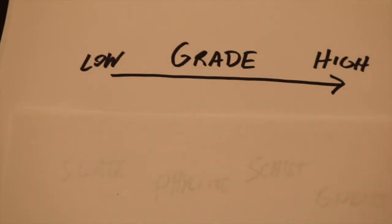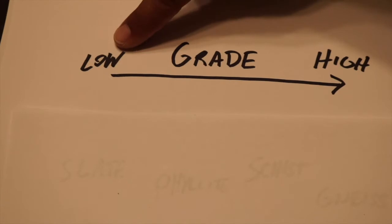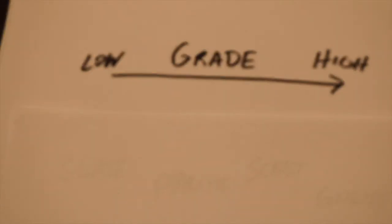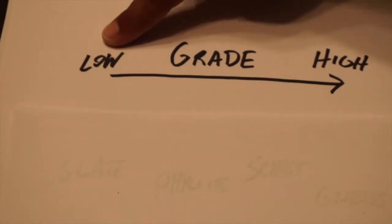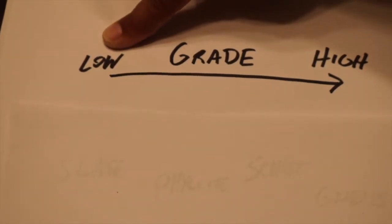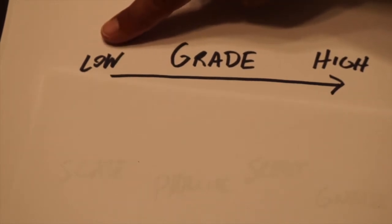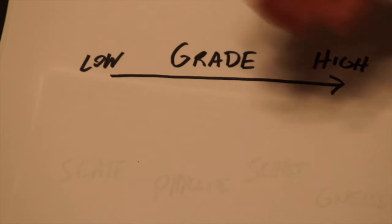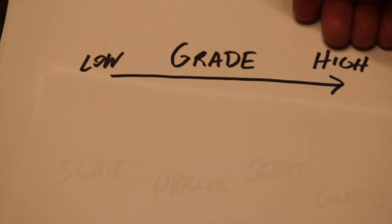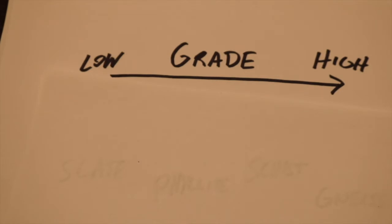Metamorphic grade refers to the range of metamorphic change that a rock undergoes, progressing from low grade to high grade metamorphism. Low grade means the rock metamorphoses at temperatures and pressures just above normal sedimentary rock conditions. High grade means the metamorphism occurs at much higher temperatures and pressures.